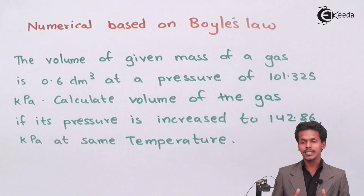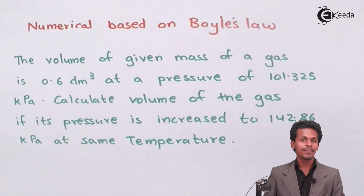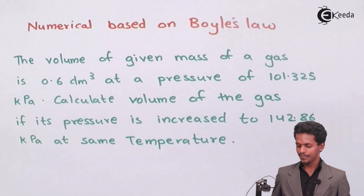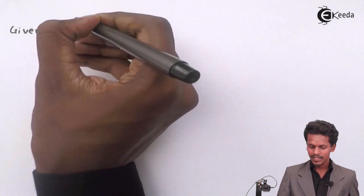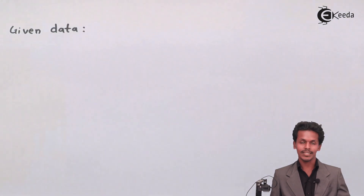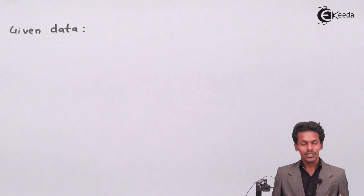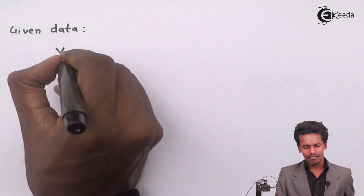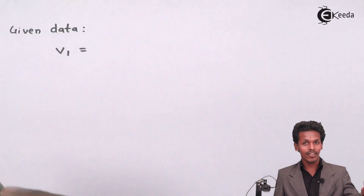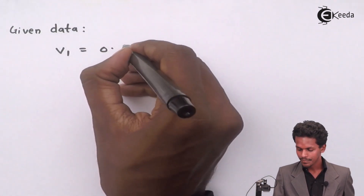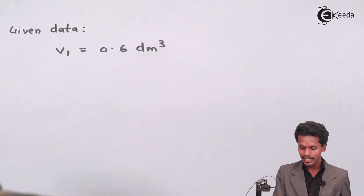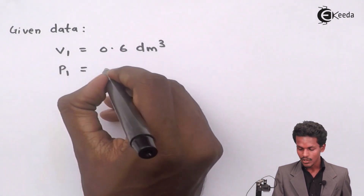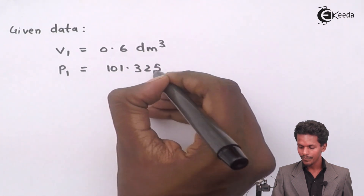The first thing we are going to do is extract the data and see what they are asking about. The given data is: the volume of the gas under the initial condition, which I name V1, is 0.6 dm³. The initial pressure P1 that has been given to us is 101.325 kPa.